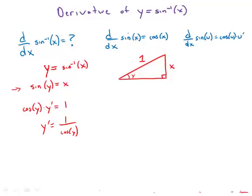So now we may ask, what is the cosine of y? Well, we have to go back to this triangle here. Using the Pythagorean theorem, we see that the third side of this triangle would be root of 1 minus x squared.